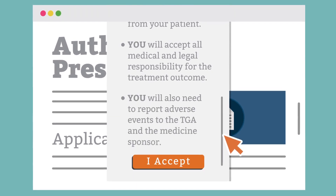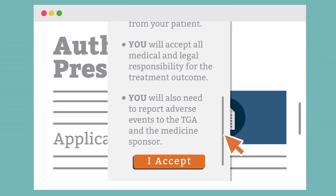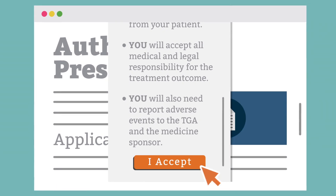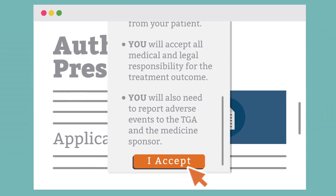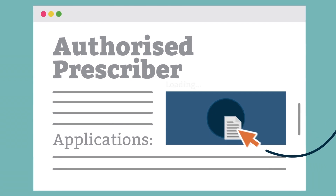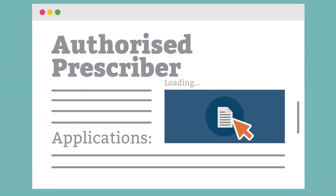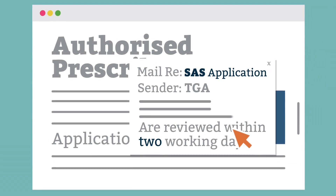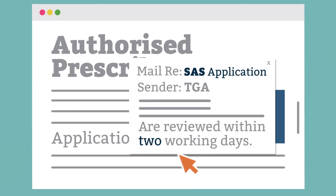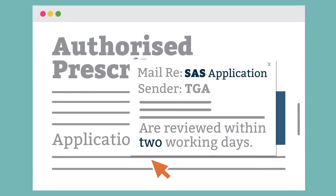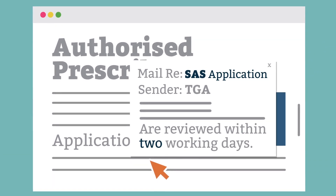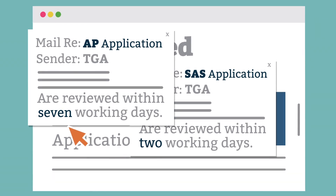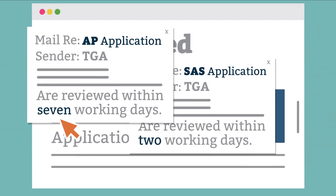You will also need to report adverse events to the TGA and the medicine sponsor. The SAS and Authorised Prescriber online system makes it easy to apply. Completed applications submitted via the online system are reviewed within two working days under the SAS, and typically within seven working days under the Authorised Prescriber scheme.